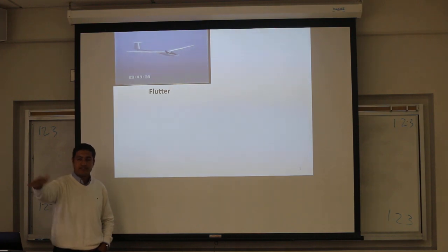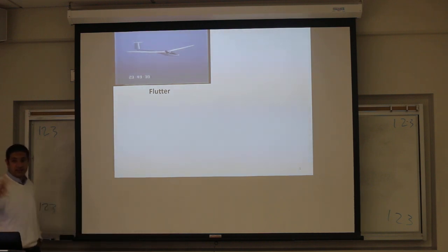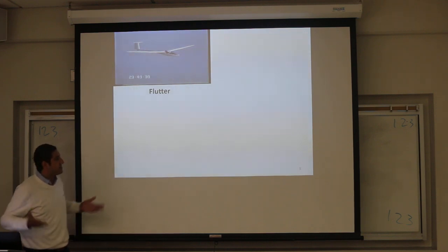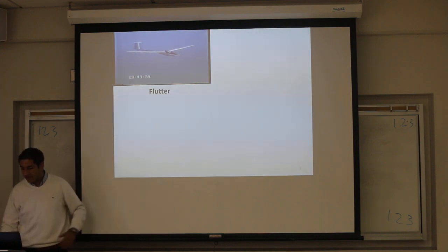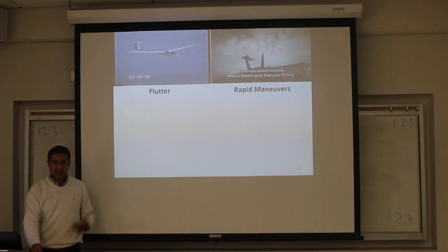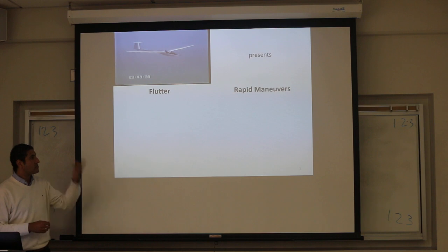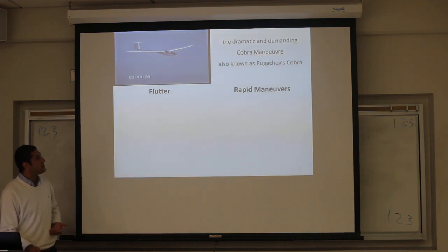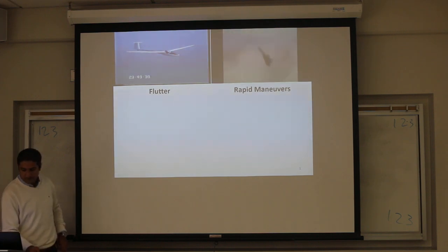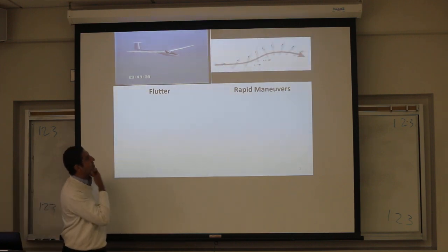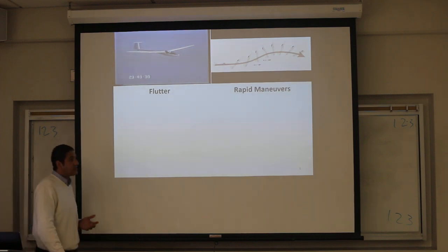This course will help you solve the flutter problem. Any rapid maneuvers like the cobra maneuvers—this is one of the gestures they call super maneuvers, the Pugachev cobra maneuver. You can see the airplane changes angle from 10 to 120 degrees angle of attack and comes back, all in about 6 to 8 seconds. It's indeed an aggressive maneuver. You cannot assume the flow is steady in this kind of maneuver.